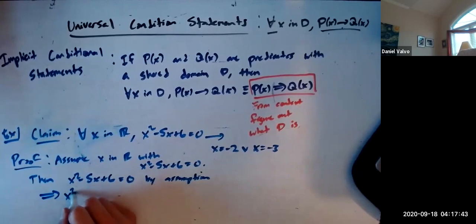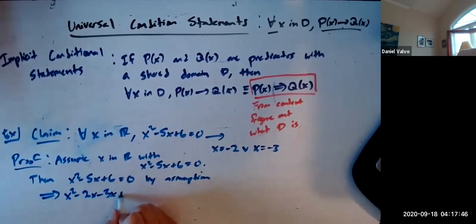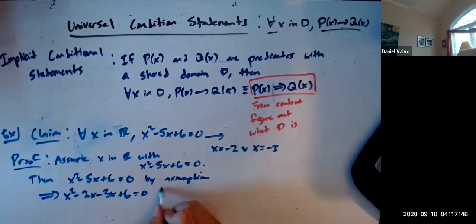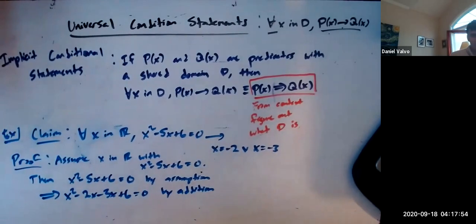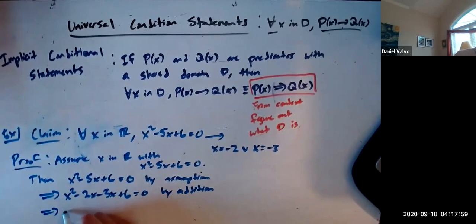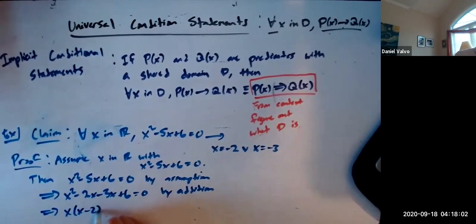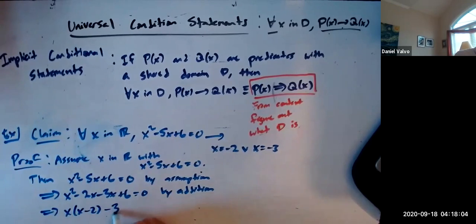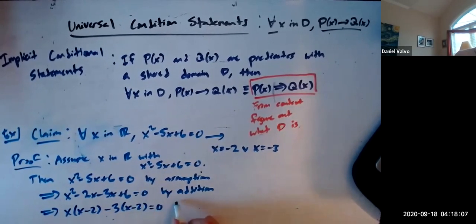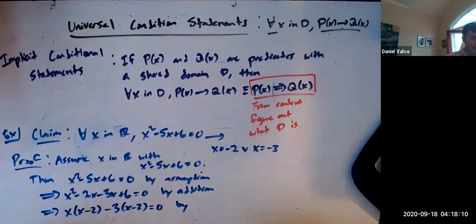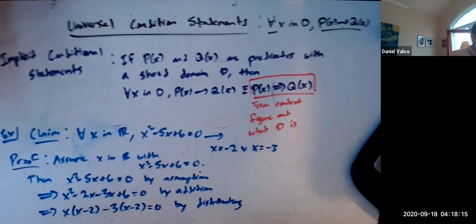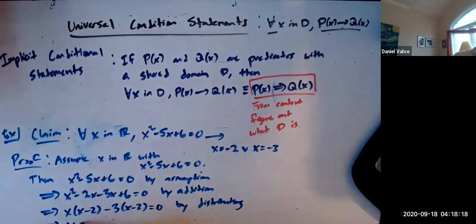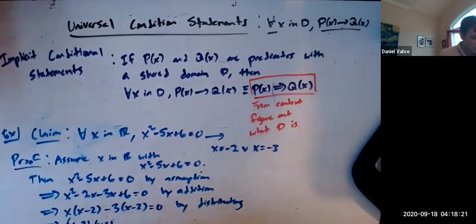We have that x squared minus 5x plus 6 equals 0 by assumption. And then from there, we can say this is x squared minus 2x minus 3x plus 6 equals 0 by reversing addition. And this is going to be the same thing as x times (x minus 2) minus 3 times (x minus 2). And what we did here is we factored, but factored is really just the opposite of distributing.